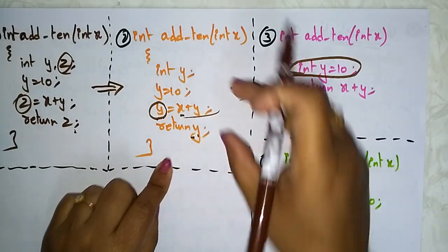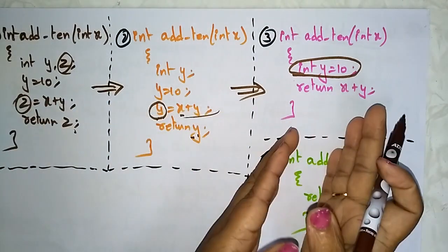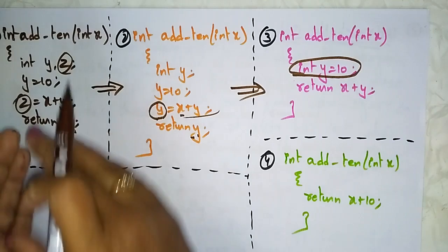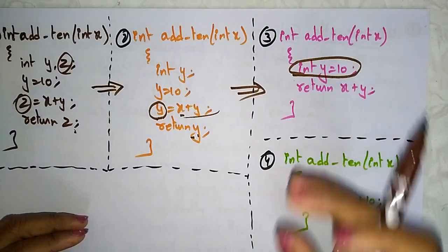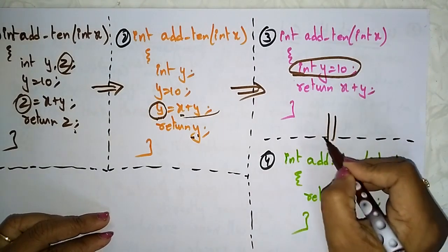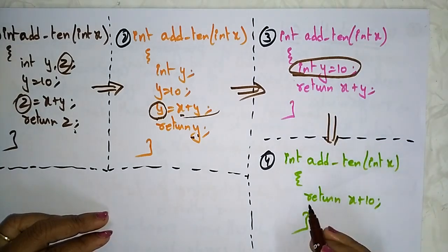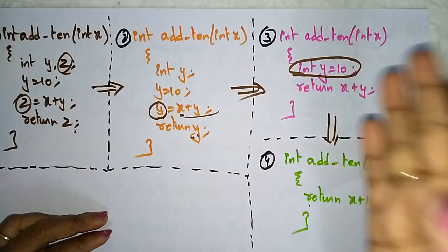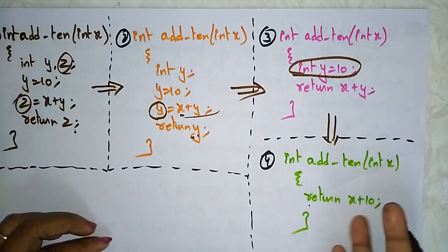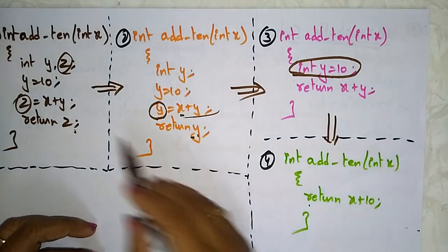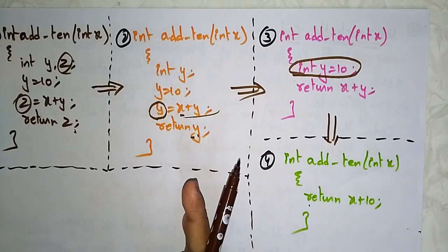All these reduced versions produce the same result, but we are reducing the number of instructions. Since y is already initialized as 10 — a constant — instead of using the variable y, we can directly return x plus 10. So at compilation level, the compiler searches for instructions that carry the same meaning.